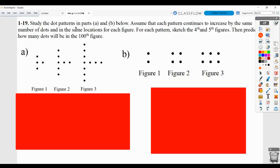First of all, they want you to study the dot patterns in these two parts. Assume that each pattern continues to increase by the same number of dots in the same locations for each figure. They want you to sketch the fourth and fifth figures, then predict how many dots will be in the hundredth figure. So first of all, we've got to look for what the pattern is.